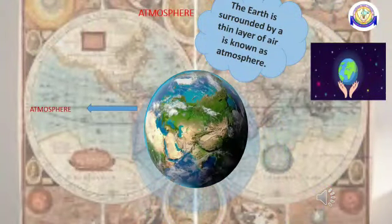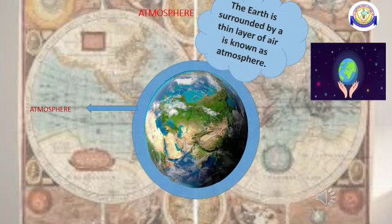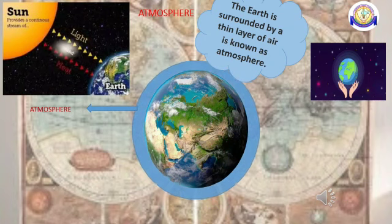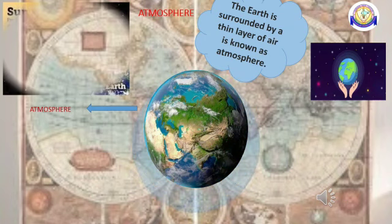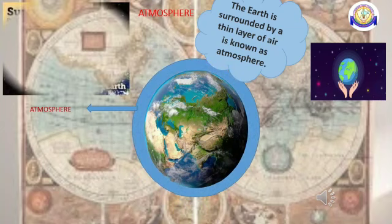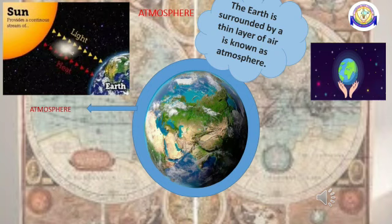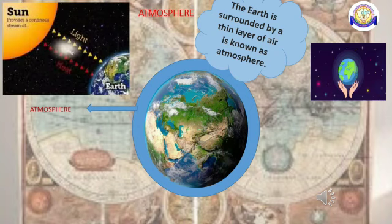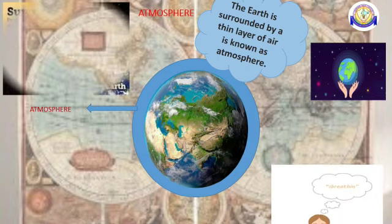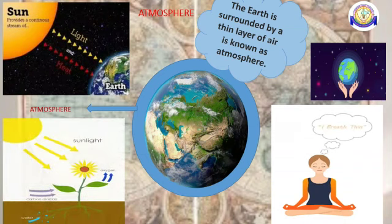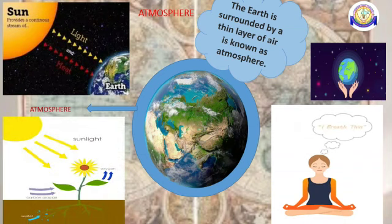The Earth is surrounded by a thin layer of air known as the atmosphere. The atmosphere protects our Earth from the harmful rays of the sun. It also helps to keep the temperature of the Earth steady. The atmosphere consists of various types of gases like oxygen, carbon dioxide, nitrogen, etc. We breathe in oxygen and breathe out carbon dioxide, and this carbon dioxide is essential for plants to make their food.